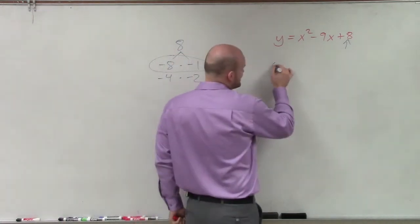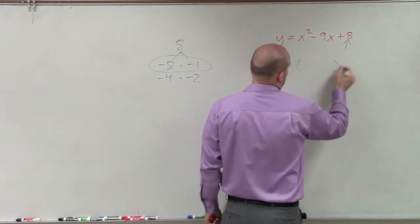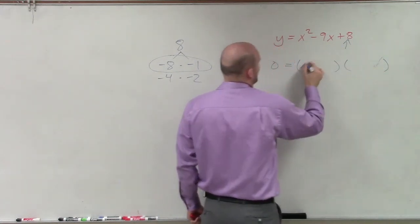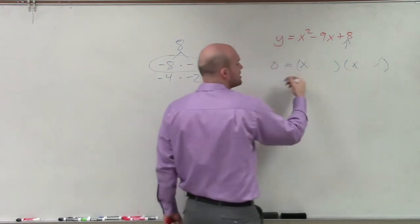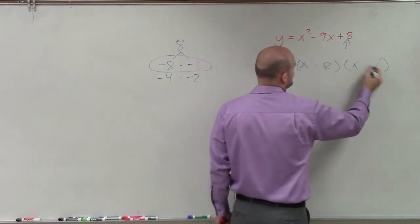Therefore, to solve this, I set it equal to 0. When we apply FOIL, x times x equals x squared, and this has to be negative 8 times negative 1.